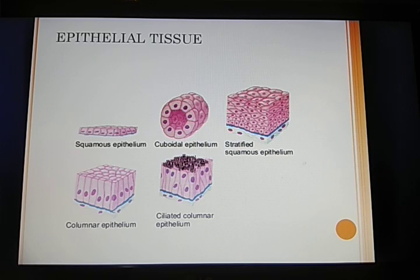We will go to the next tissue which is ciliated columnar epithelium. This is just like columnar epithelium but it has cilia. It is normally located in the windpipe and it contains cilia. We will see how these tissues are arranged in a living body.